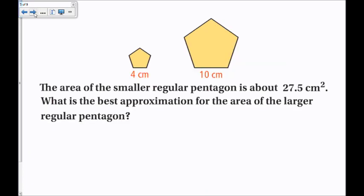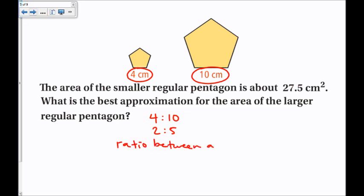The area of the smaller regular pentagon is about 27.5 square centimeters. What is the best approximation for the area of the larger regular pentagon? I'm given side lengths of 4 and 10, which gives a scale factor of 4 to 10, simplifying to 2 to 5. The ratio between the areas is the scale factor squared: 2 squared to 5 squared, which is 4 to 25.